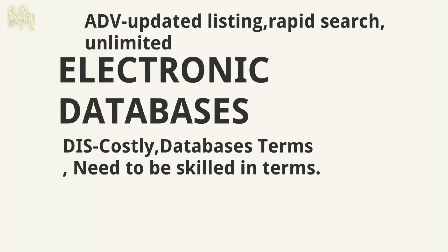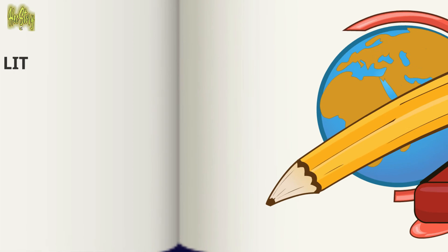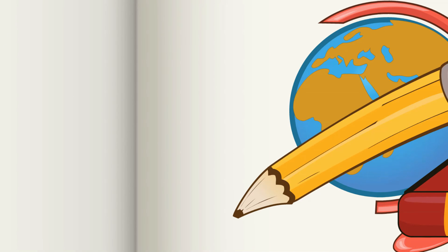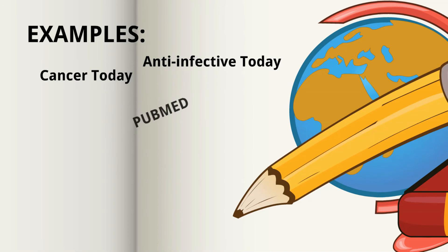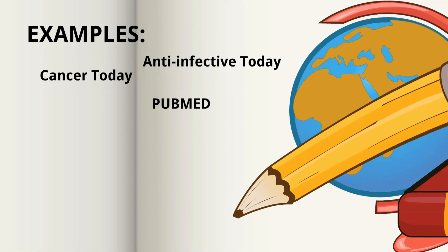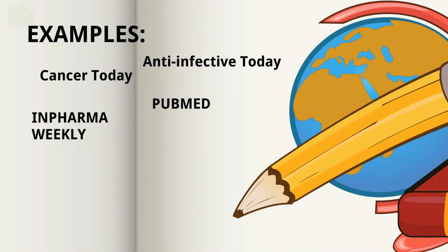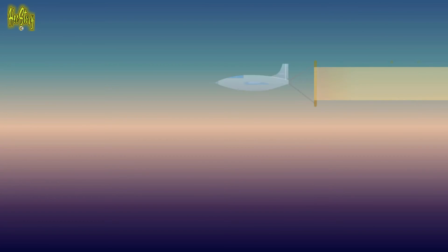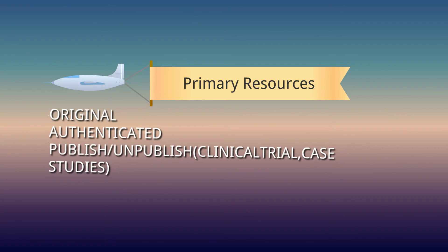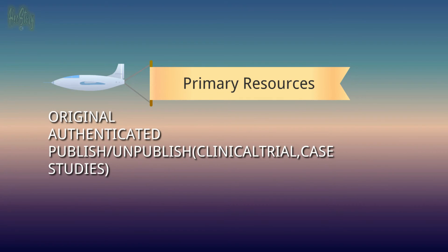Those are the two availability types for secondary literature. Examples of secondary literature include: Anti-infective Today, Cancer Today, PubMed — one of the most well-known — InPharma Weekly, ToxNet, and MEDLINE.